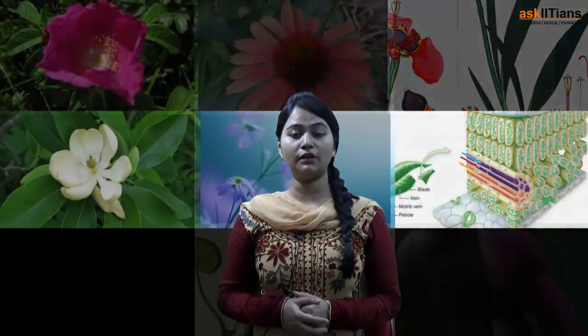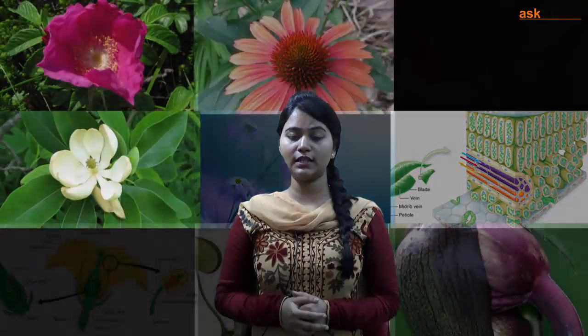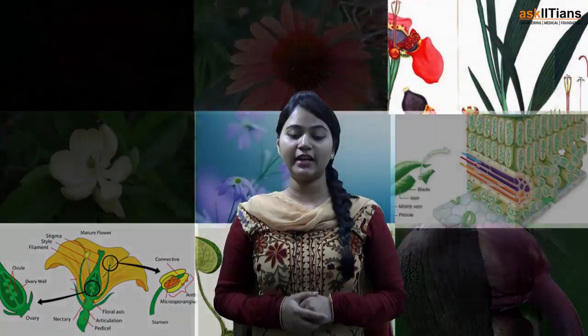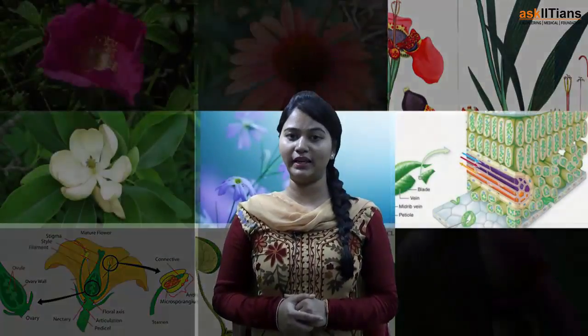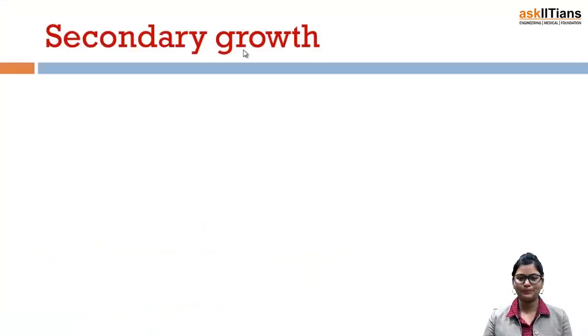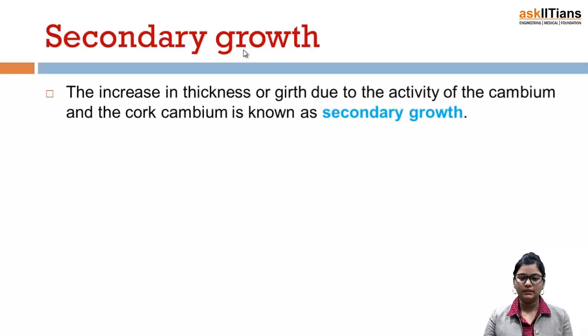Hey students, this is part 7 of Anatomy of Flowering Plants. In this part we will be discussing about the most important topic, that is secondary growth in dicot stem.